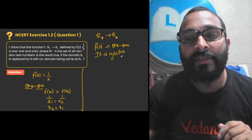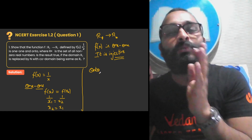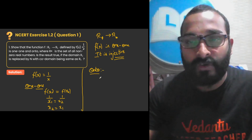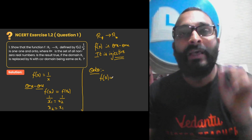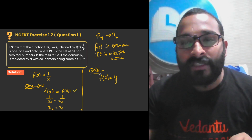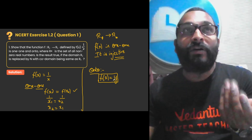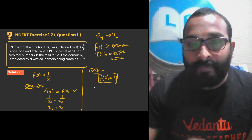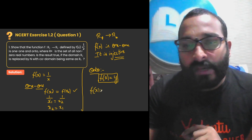Now let us check for the onto function. For onto, if you substitute y = f(x) and write x in terms of y, and on simplification you get f(x) = y, then the function is onto. So if f(x) = y we can write that condition easily. Let us apply this: f(x) = 1/x, so 1/x = y.